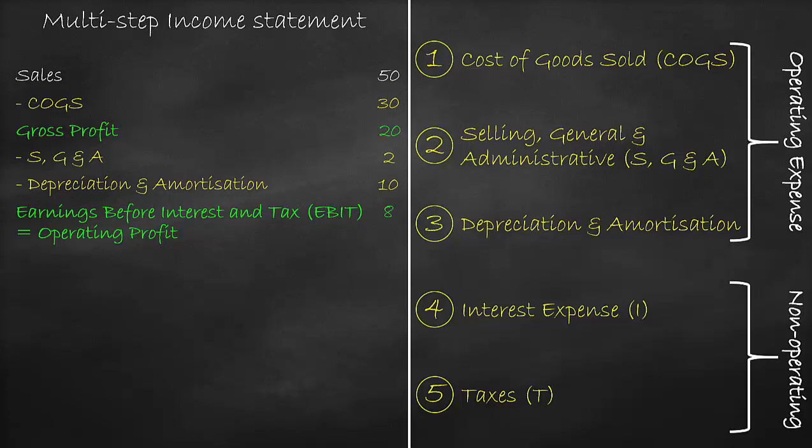Earnings means profit, so EBIT is our profit level before we pay the last two expenses, which are interest and taxes. EBIT is also called operating profit, because this is the level of profit after we deduct the operating expenses of COGS, selling, general, and administration expense, and depreciation and amortization expense.